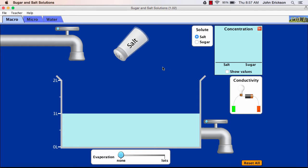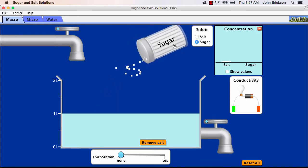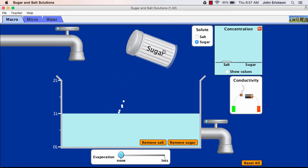A model such as this one allows scientists to see and do things they wouldn't otherwise be able to. In this model, we have a container of water. We also have a shaker of salt and another shaker of sugar.